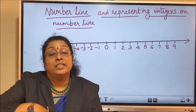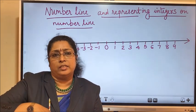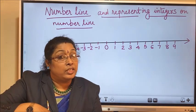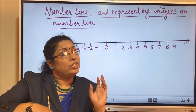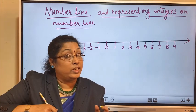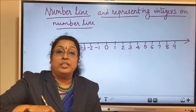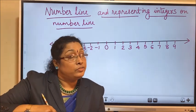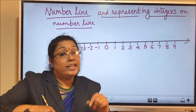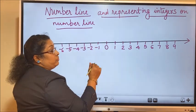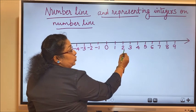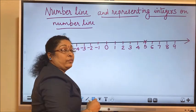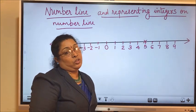Now let's look at how we can represent integers on this number line. If you are asked to represent the positive integer 5 on a number line, to which side of 0 should we move? We have studied that positive integers are on the right side. So to represent positive 5, move to the right side. Here it is 1, 2, 3, 4, 5. So this is the positive integer 5. We have represented this positive integer on a number line.